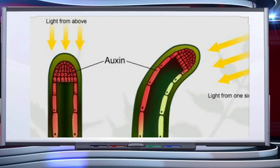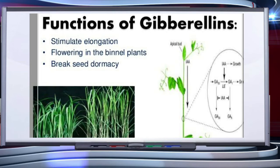This slide shows the effect of auxins on the root tip. Auxins promote cell division and elongation. Auxins are also used for the production of seedless fruits. They also cause apical dominance of the terminal bud.